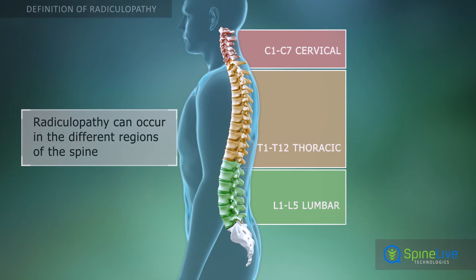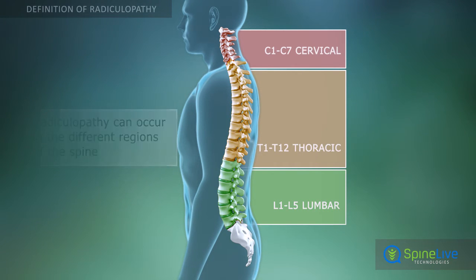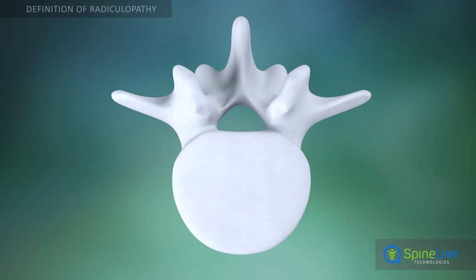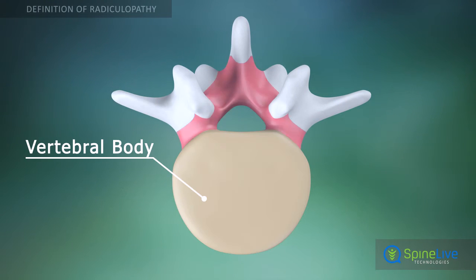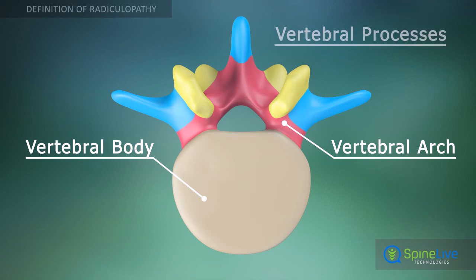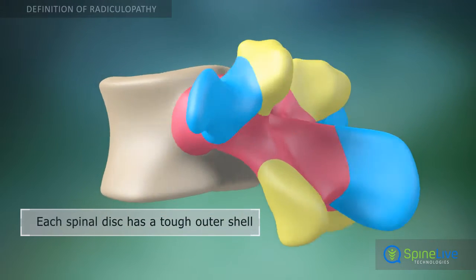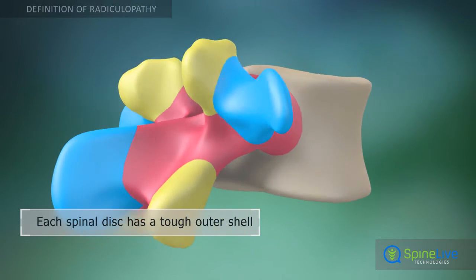A typical vertebra consists of a body and a vertebral arch, which has several processes for articular and muscular attachments.